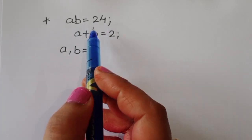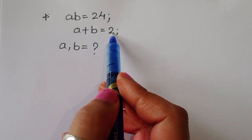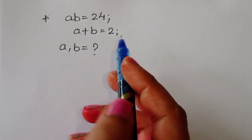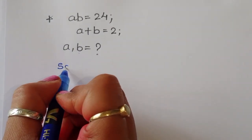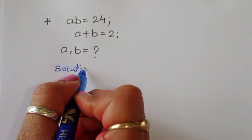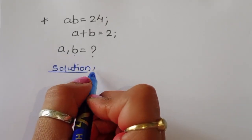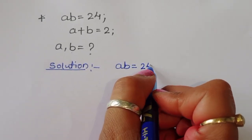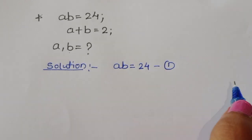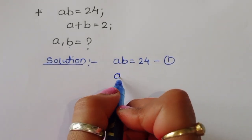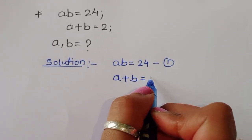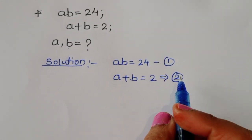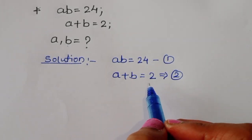We are given ab is equal to 24 and a plus b is equal to 2. We have to find out the value of a and b. This is equation number 1 and equation number 2. Now we have these two equations.